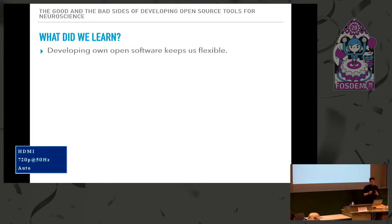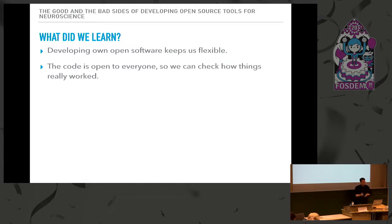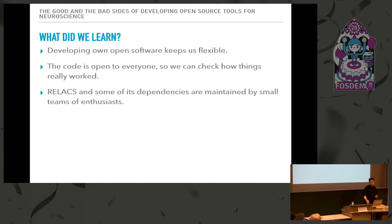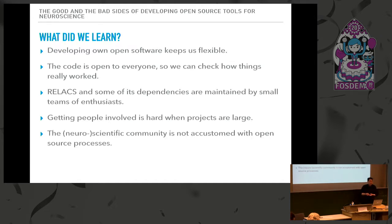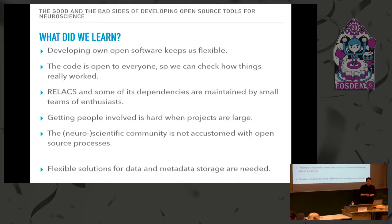What do we learn from doing this kind of stuff? We develop our own software that keeps us very flexible. The code is open to everyone so we can go back and check how things were really done and figure out if there were issues. RELAX and some of its dependencies are maintained by only small teams — that makes it critical, but it's a free-time activity. Getting people involved is really hard; whenever we hire a student to work on pieces of it, it's really hard. The neuroscience community finds it very hard to get accustomed with open source processes like sending a pull request. And finally, we need flexible solutions for data and metadata storage since our tool is completely open to changes.